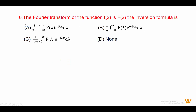Number six: the Fourier transform of function fx is capital F(lambda). The inversion formula is: 1 upon 2pi, integration from minus infinity to plus infinity of F(lambda) e raised to i lambda x dx. Answer is option A.